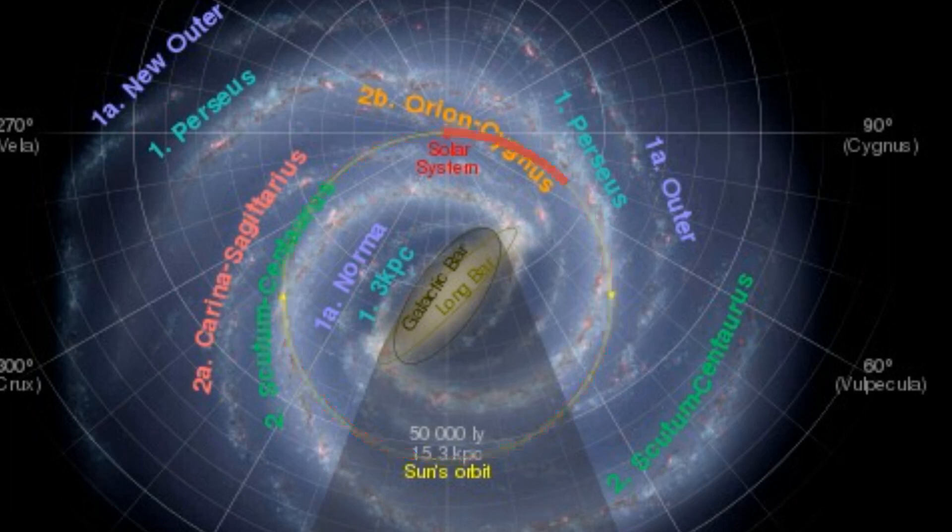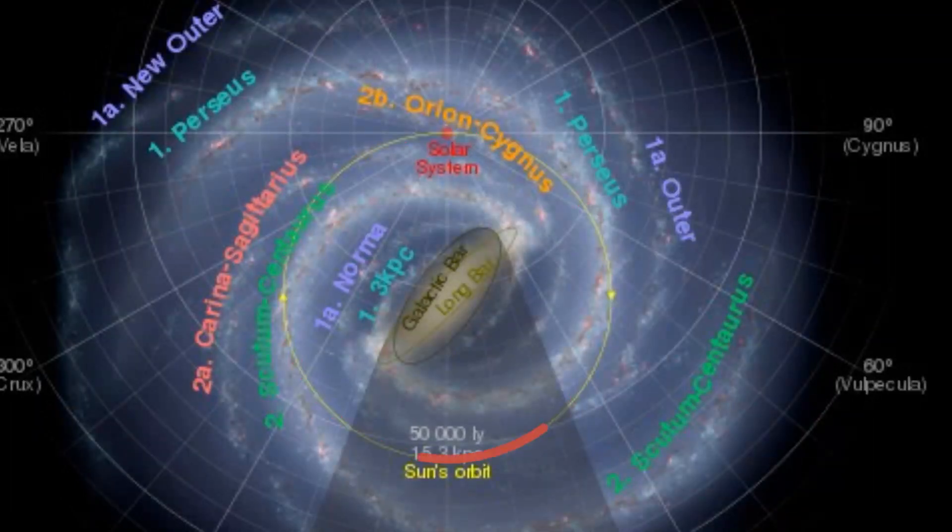In fact, the Sun hasn't even completed 20 revolutions around the galaxy since the Earth was formed 4 and a half billion years ago.